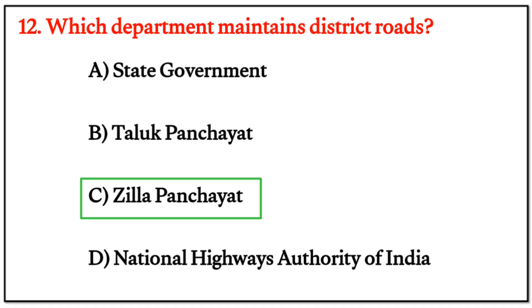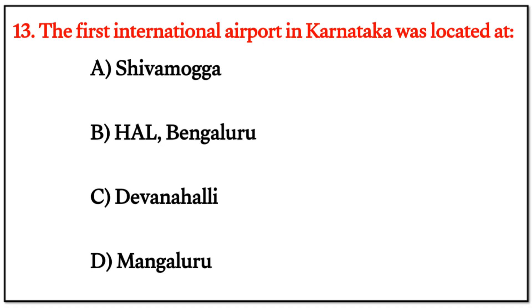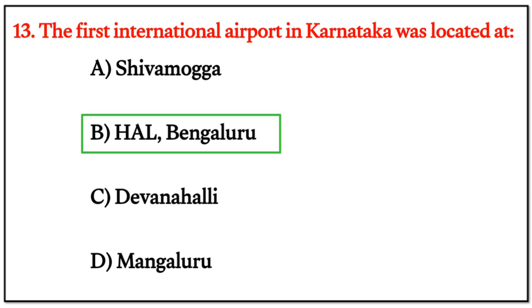MCQ Question 13: The first international airport in Karnataka was located at? The correct answer is HAL, Bengaluru.